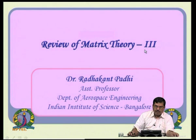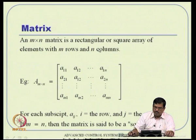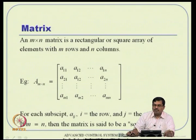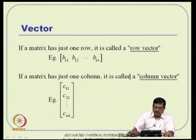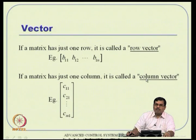We start with the basic definition: a matrix in general is of M by N, a rectangular array of elements with M rows and N columns. For each subscript i j, i means the row and j means the column. If M equals N, it is a square matrix. A related concept is a vector — if a matrix has just one row, it is called a row vector; if it has one column, it is called a column vector.